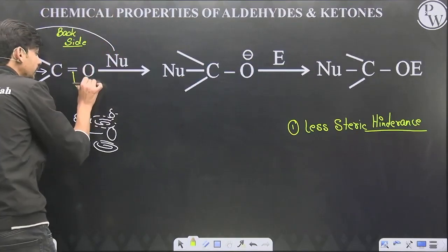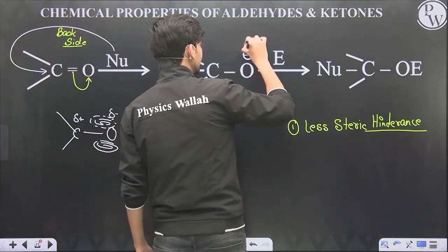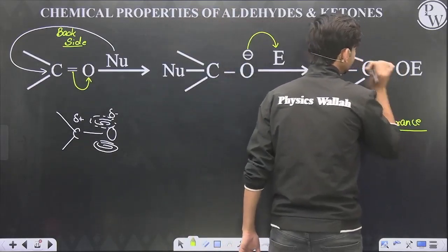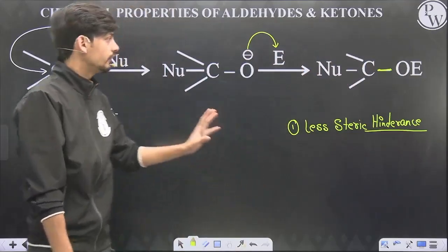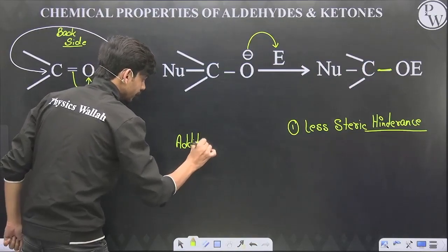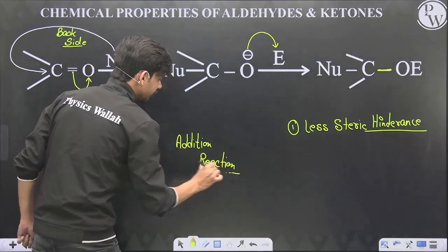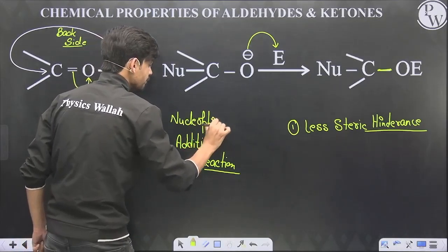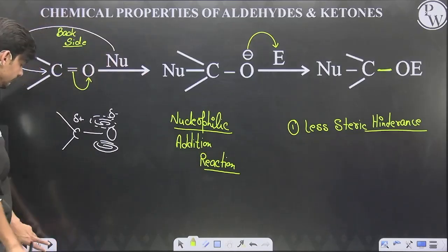As the nucleophile attacks, oxygen takes away all the electrons towards itself and then attacks an electrophile. Finally, instead of a pi bond, two new groups — a nucleophile and an electrophile — are added. That's why such reactions are called nucleophilic addition reactions.